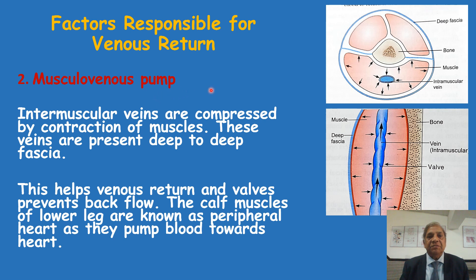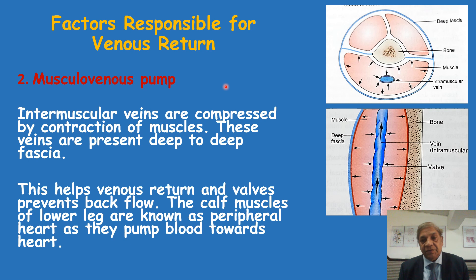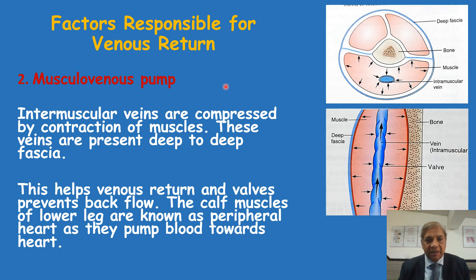The musculo-venous pump is formed because of the deep fascia which is surrounding the leg very tightly, like a tight bandage. This deep fascia is made up of collagen fibers which are inelastic — that means this deep fascia cannot be expanded under pressure. It forms a tight covering over the muscles of the lower limb, especially in the leg and thigh. So whatever veins are present — for example, in this transverse section from the leg region — this is the bone, tibia and fibula.